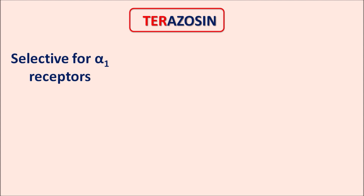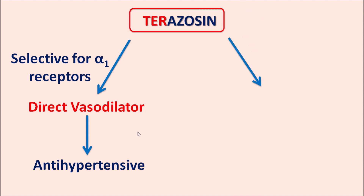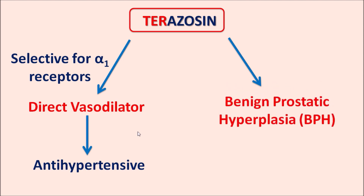Terazosin is a selective alpha-1 receptor blocker. These alpha-1 receptors are not only present at the bladder neck and prostate capsule, but are also majorly present at systemic blood vessels. By blocking these alpha-1 receptors at the vascular smooth muscle, Terazosin acts as a direct vasodilator. That is why this drug is also used as an antihypertensive. However, in the treatment of hypertension this drug is used as a second-line agent because it produces direct vasodilation resulting in reflex tachycardia.